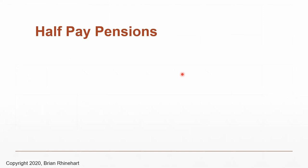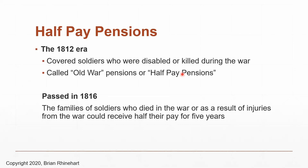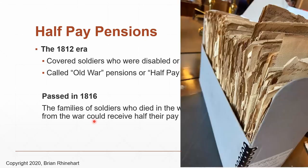The half-pay pensions are a hidden gem at the National Archives. In 1816 they passed that law allowing widows and children of soldiers killed in the war to receive half the soldier's military pay for five years. These are housed in the paymaster records boxes — the paymaster was documenting all money coming in and out, and these half-pay pension files are included in there. They're very old, very brittle, and there are a ton of them.